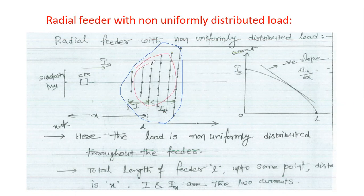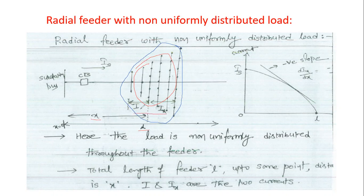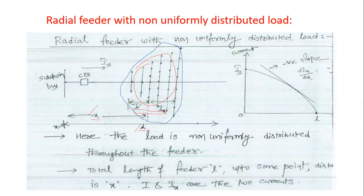These loads are the non-uniformly distributed load. The load is non-uniformly distributed throughout the feeder. The total length of this feeder is L. Up to some point distance x, we are taking i and ix as some distances at those load points.